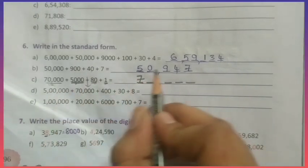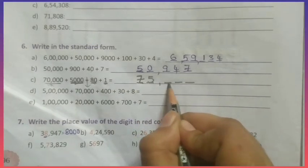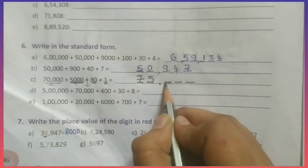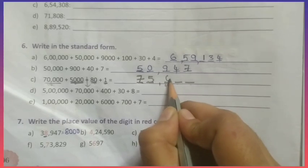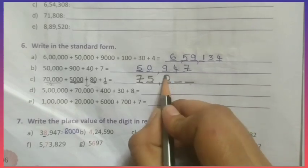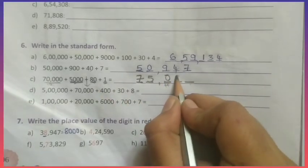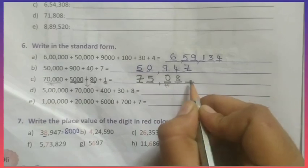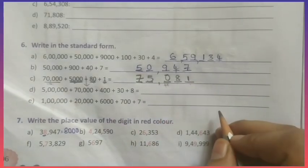Now 5,000 — hundreds is not given here, so we write 0 there. Next, 80 means 8 tens, and ones are 1. So the answer is 75,081.